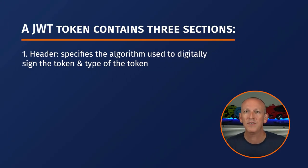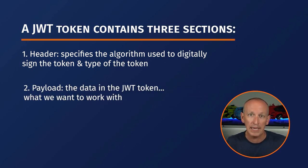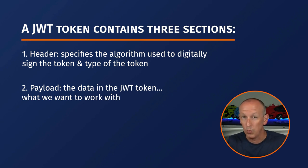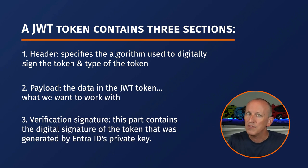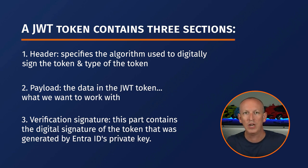The JWT token is going to contain three main sections. The header section specifies the algorithm used to digitally sign the token and the type of the token. The payload is the data in the JWT token — what we actually want to work with. And then there's the verification signature, which contains the digital signature generated by Entra ID's private key. You validate the authenticity of the JWT token's data by using Entra ID's public key to verify the signature. If that works, you know the contents were signed with the private key; if not, you should treat the JWT token as invalid.